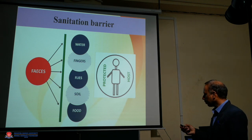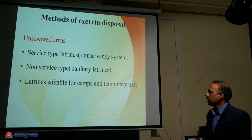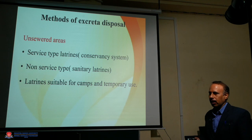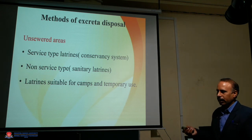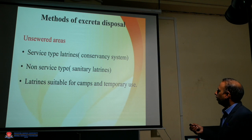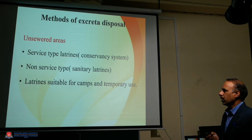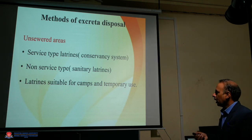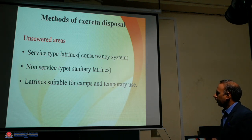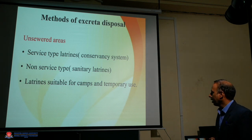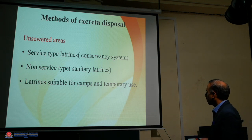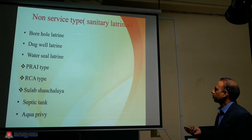What is the method of excreta disposal to prevent contamination? In the unsewered area and the sewered area, the sewered area comes under service type latrines — also called the conservancy system. The second one is non-service type, called sanitary latrines. The third type is latrines suitable for camps and temporary use.